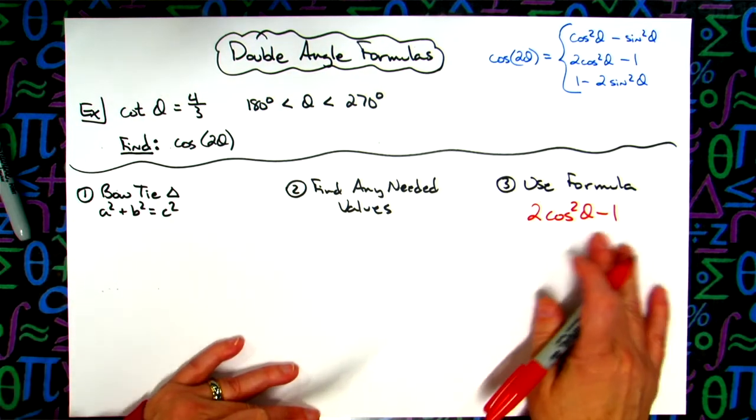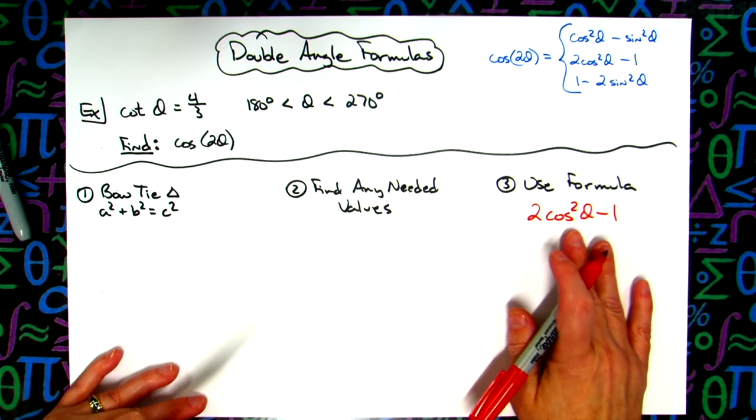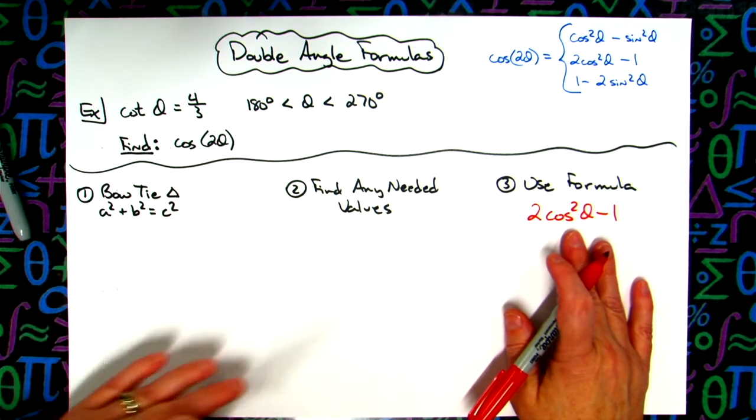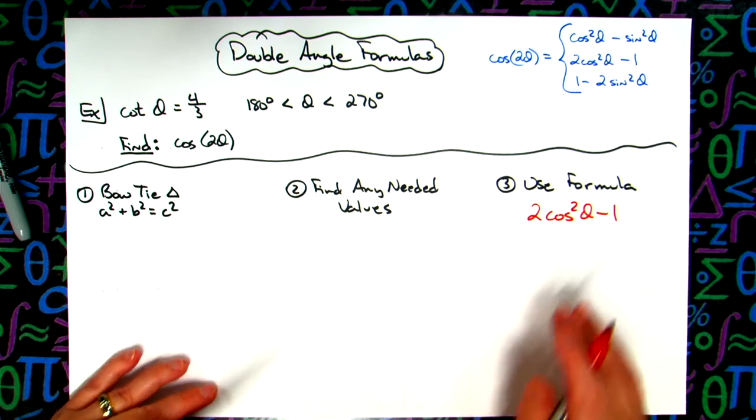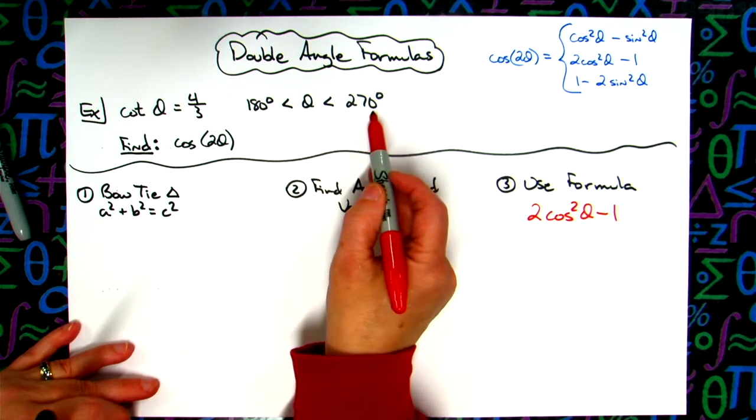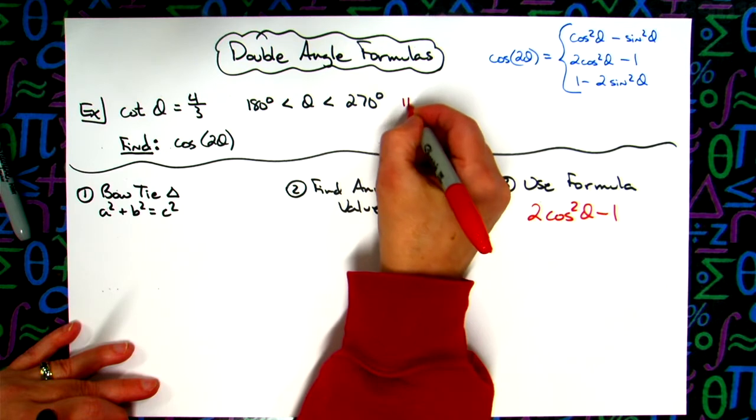So let's just go with that middle one and say that we're going to use 2cos²θ - 1. That's the formula I'm going to use, which means I'm going to need to find, with that given information, a cosine value to be able to plug in. So we looked right here and we already said that this is quadrant three.